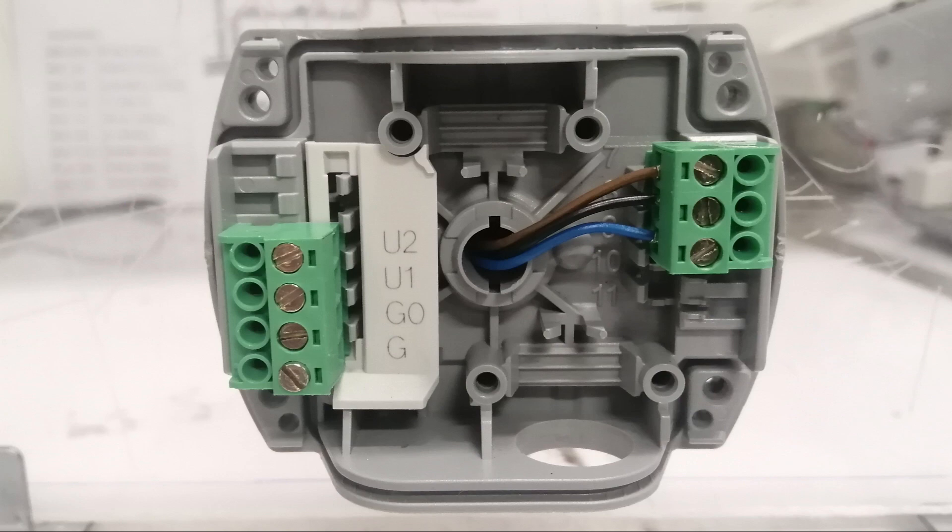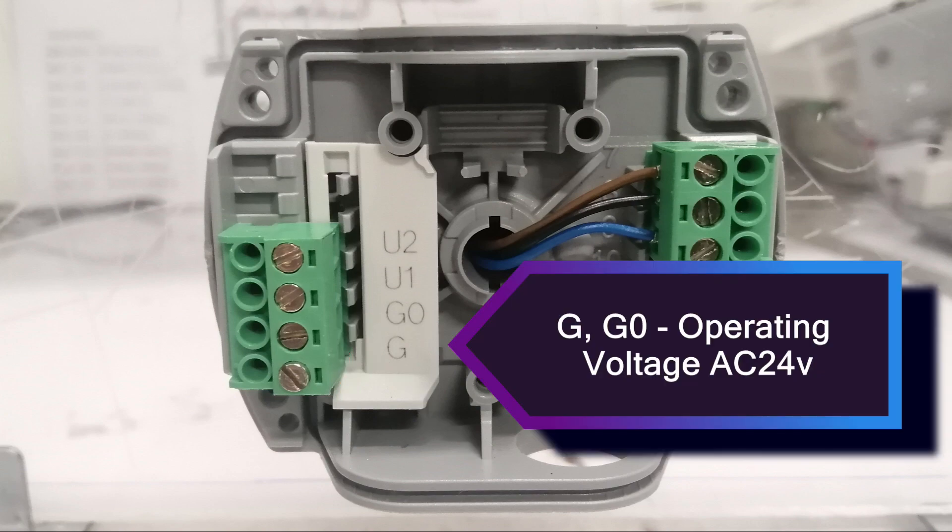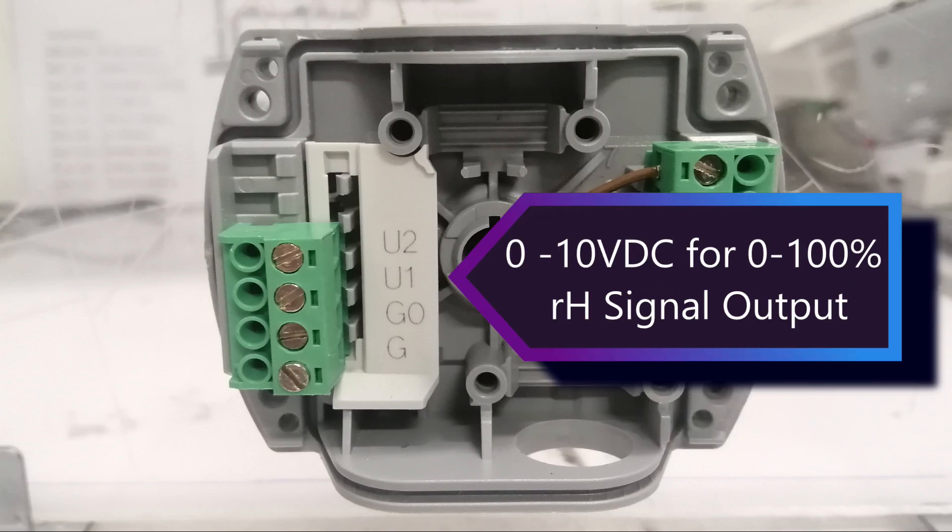This is where the terminal blocks are located. This terminal block is for the sensing element and the other terminal block is for the power supply input and signal output. G and G0 are terminals for operating voltage, U1 is for humidity signal output, and U2 is for temperature signal output.